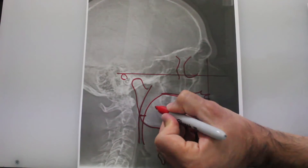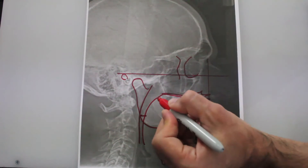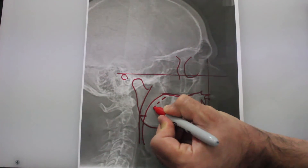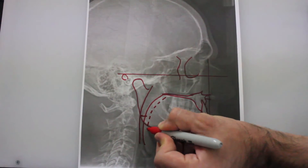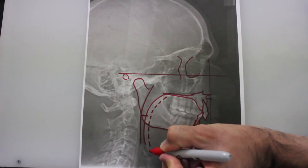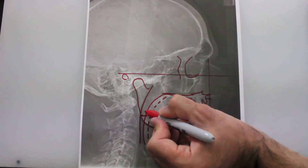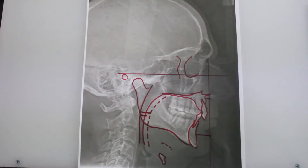And by advancing the upper and lower jaw, the posterior airway space can be widened to this much, improving the posterior airway space and therefore breathing.